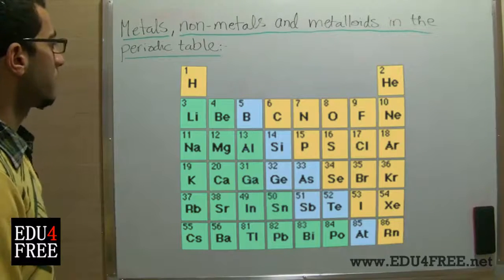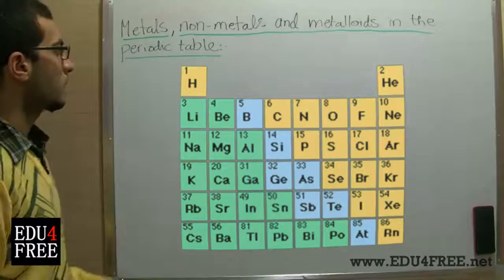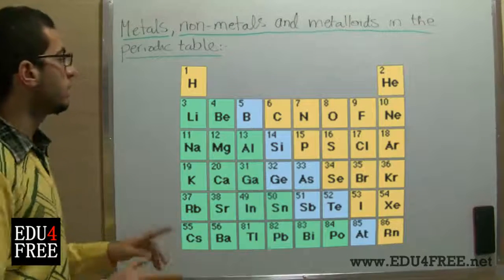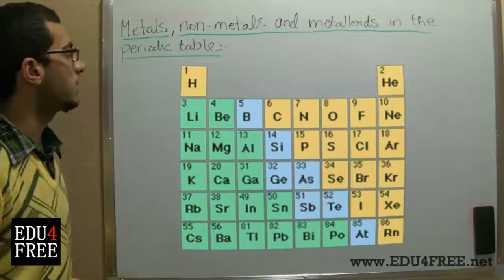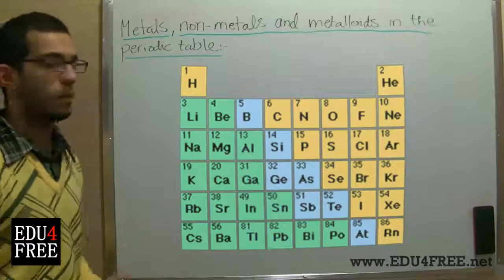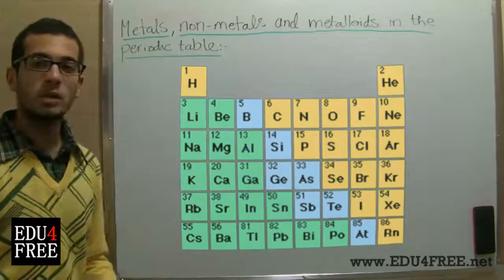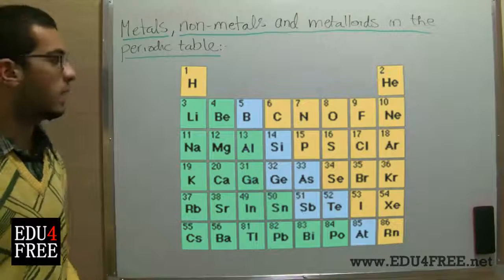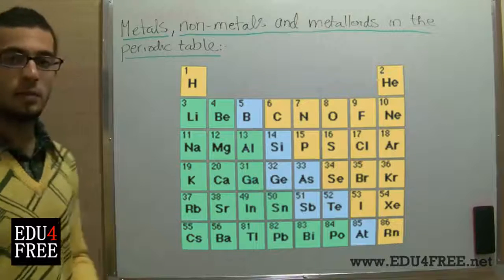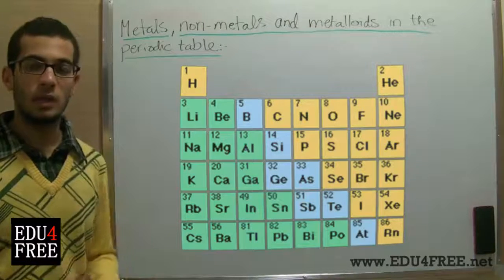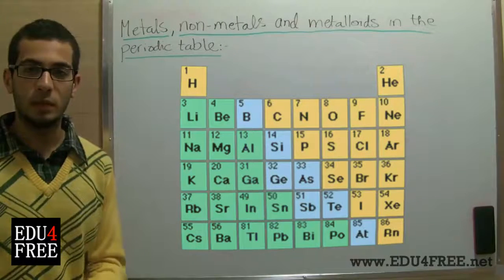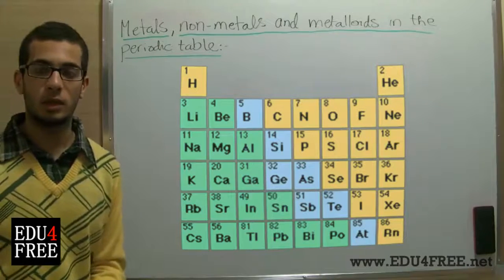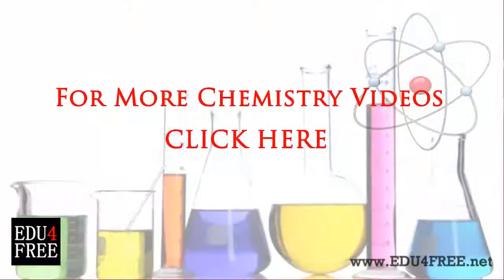So this is it for today. Now we know the metallic and the nonmetallic property and we know also the metalloids. Next time we will talk about the acidic and the basic properties of elements in the periodic table. Thank you for watching and see you. Assalamu alaikum.